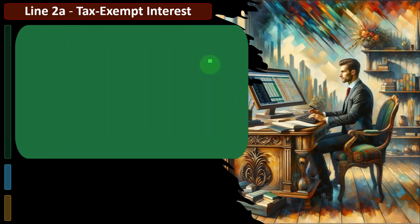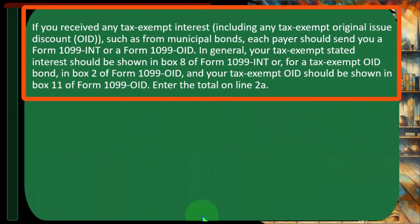Line 2A: Tax-Exempt Interest. If you receive any tax-exempt interest, including any tax-exempt original issue discount (OID) such as from municipal bonds, each payer should send you a Form 1099-INT or a Form 1099-OID. Your tax-exempt stated interest should be shown in box 8 of Form 1099-INT, or for a tax-exempt OID bond, in box 2 of Form 1099-OID. Your tax-exempt OID should be shown in box 11 of Form 1099-OID. Enter the total on line 2A.